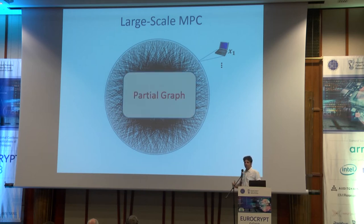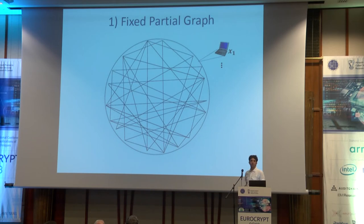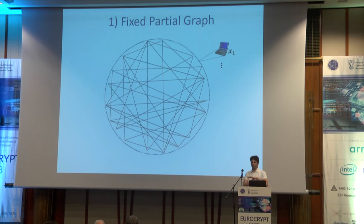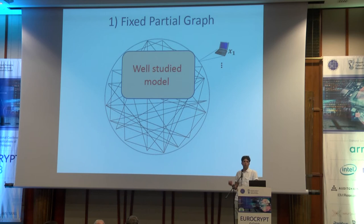One way to ask whether we really need this huge overhead is to consider partial graphs of communication — a fixed partial graph where, before we start computing, everybody knows who they can talk to. This is an old model, studied since the 80s.